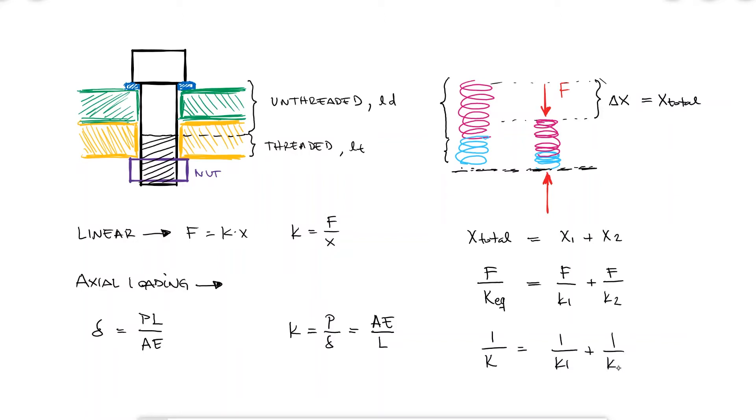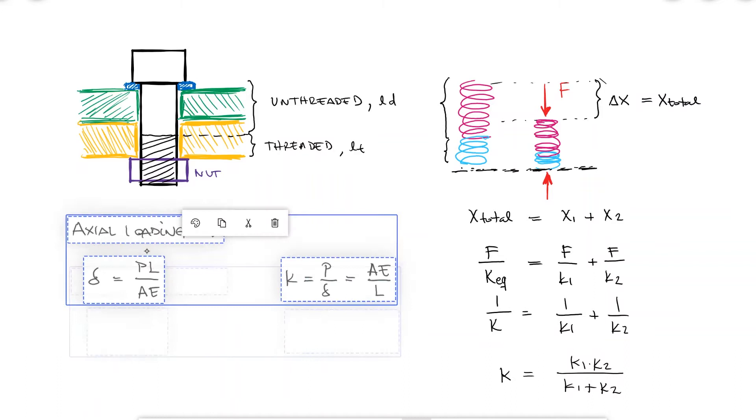Dividing by F yields the equation we need. Solving for K, we get K1 times K2 over K1 plus K2.